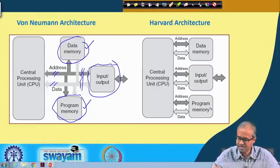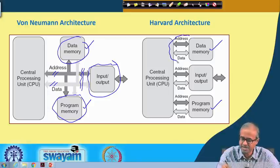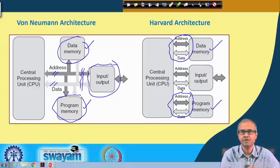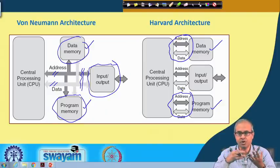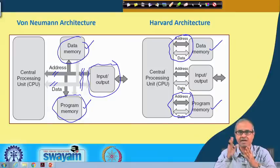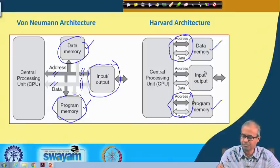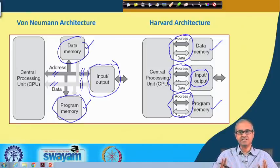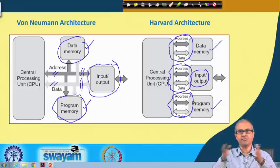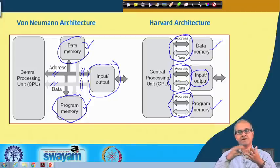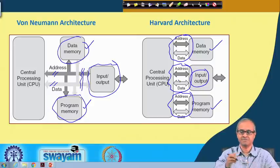In Harvard architecture, there are separate data and program memories and the address and data buses are entirely separate. While you are fetching a program instruction, in parallel you can also fetch or write some data into data memory. In some architectures, the input output devices are also connected via separate address and data buses. The drawback is that you need so many buses and lot of input output pins to interface external devices. But the advantage is that you get on average faster and parallel data transfer features.